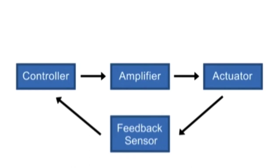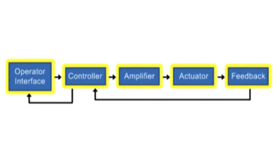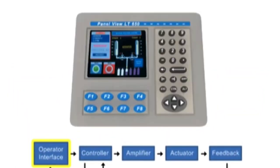A closed-loop motion control system is comprised of the following elements. The operator interface allows the user to command signals to the controller. Examples of an interface are industrial computers or an operator interface terminal.